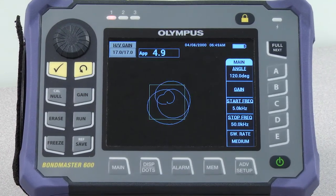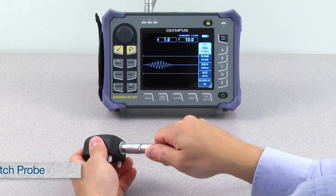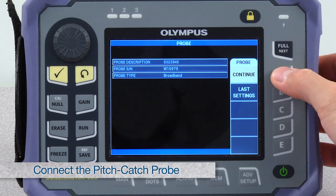Configuring the Bondmaster 600 for general-purpose disbond detection is very easy. Simply connect the pitch catch probe and press continue.